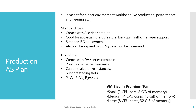Premium is the best class within the Production App Service Plan. It comes with Dv2-series compute, provides better performance, can scale up to 20 instances, and supports staging slots. It comes in P1v2, P2v2, and P3v2 flavors. Additionally, the regional VNet integration capability is available with this Premium plan.